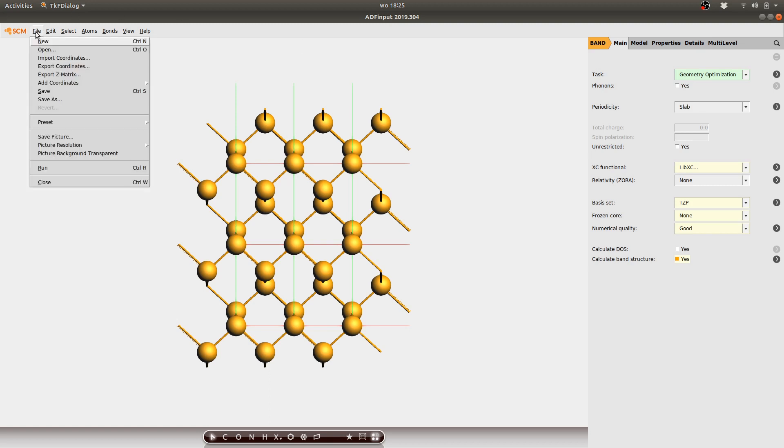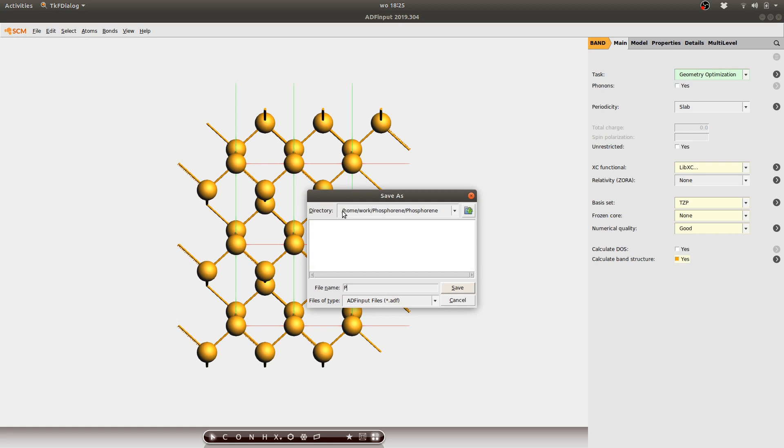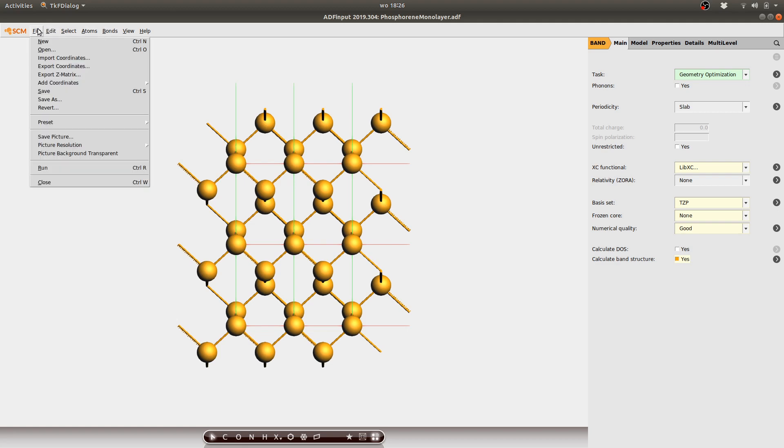With that we are good to go. We save our calculation. Give it a meaningful name. Phosphorene monolayer. Save it and then in principle we can start the calculation by clicking on run here.